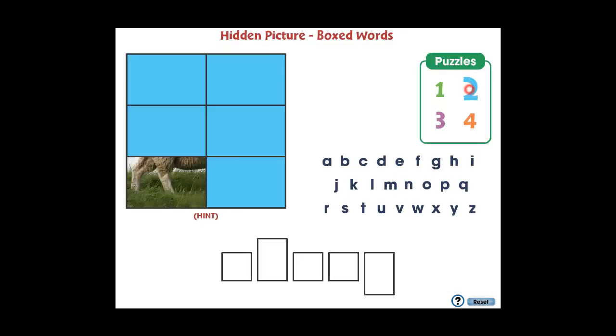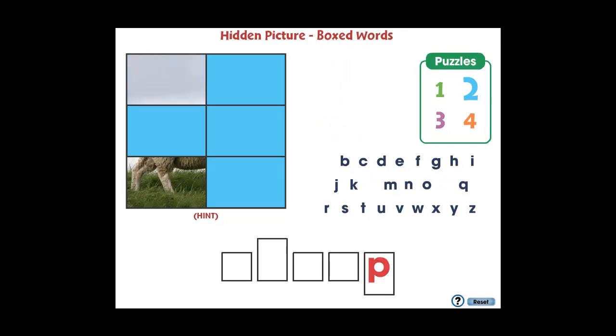First, students choose one of the provided puzzles. Then, students solve the hidden picture word puzzle by choosing letters that have the same shape as the boxes to reveal the hidden picture.